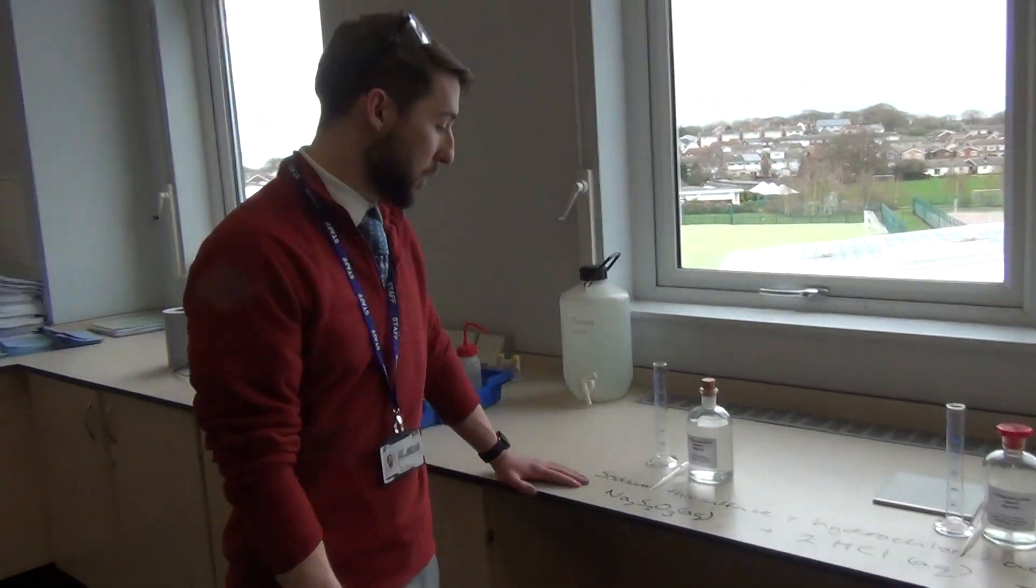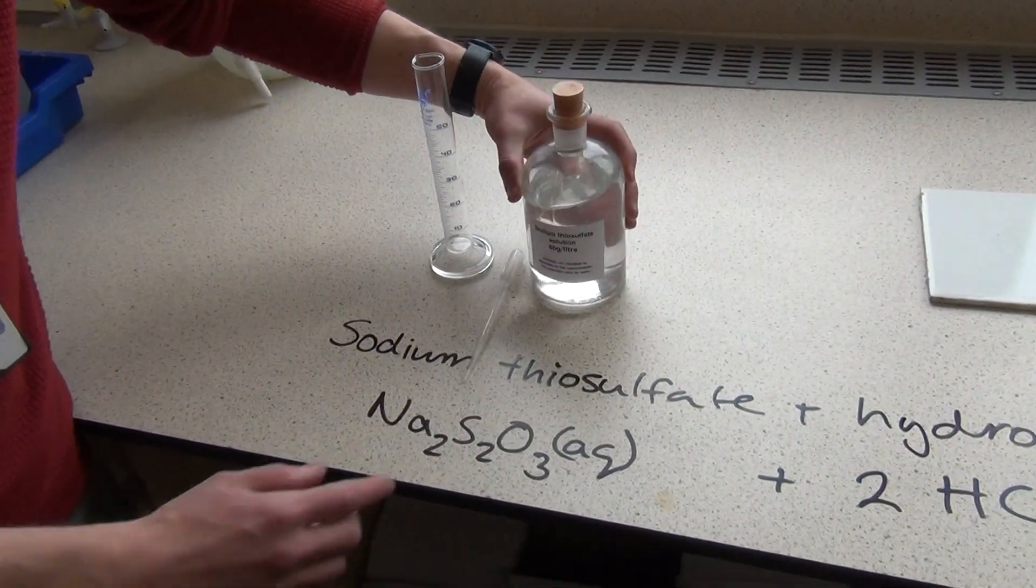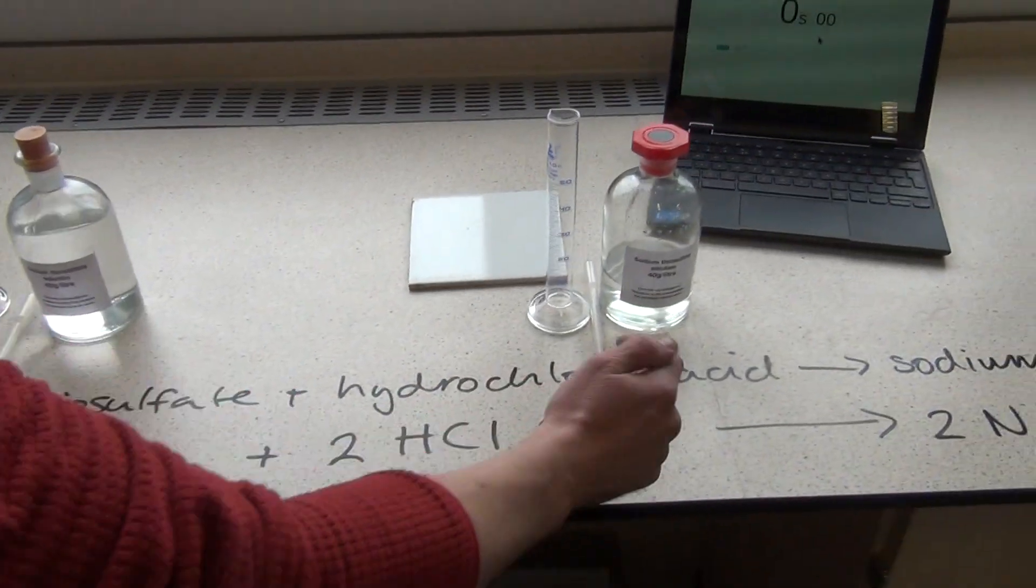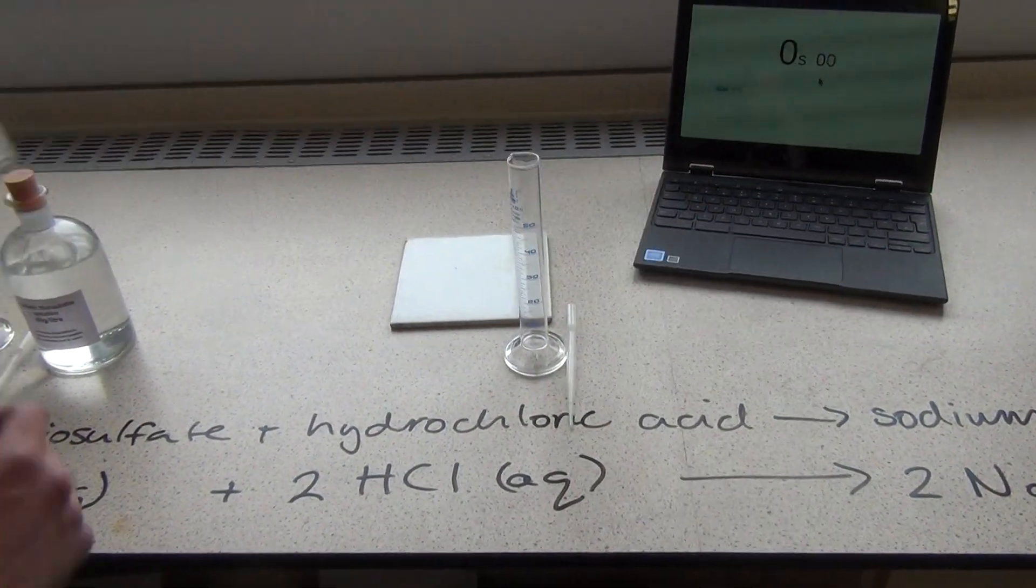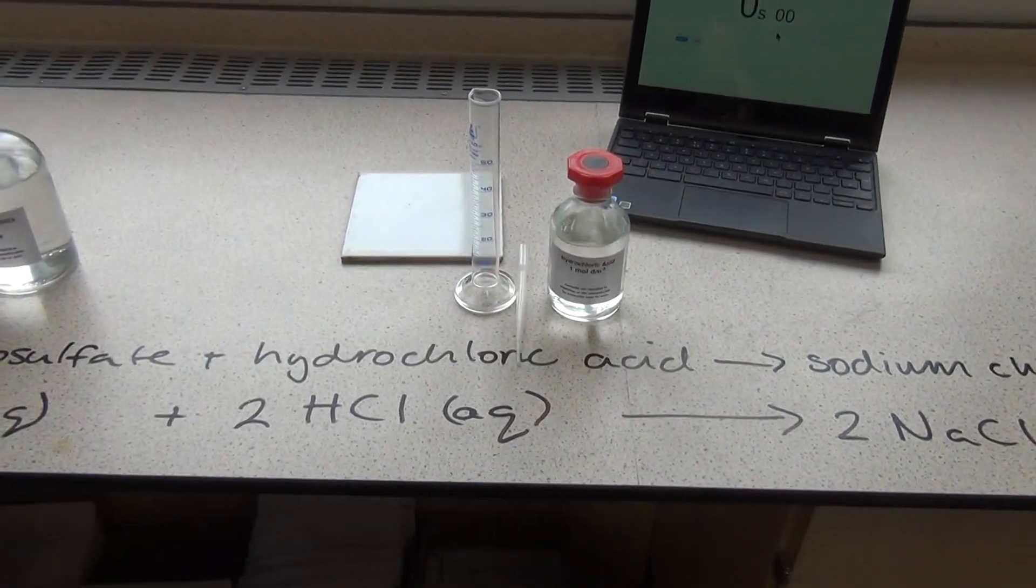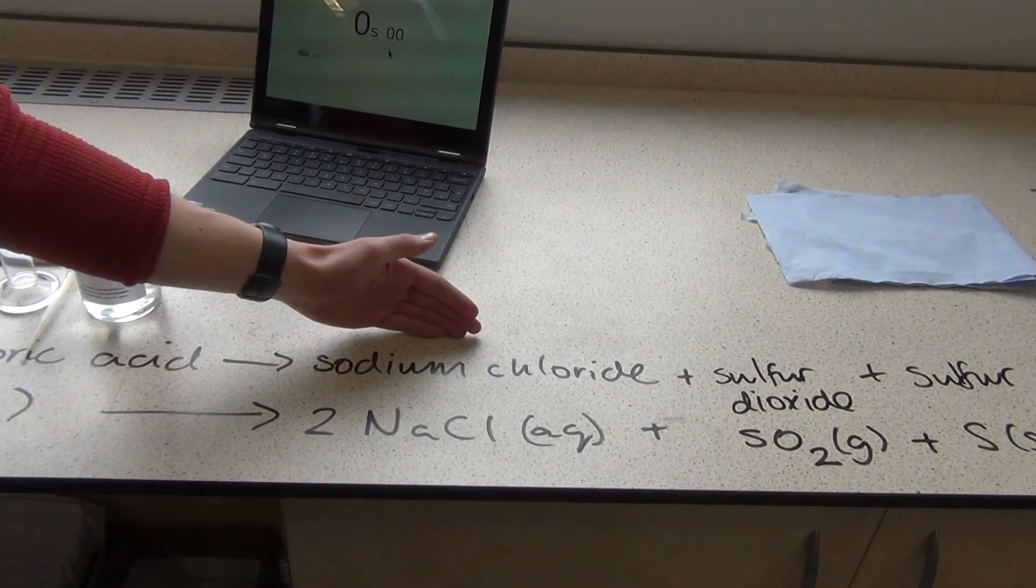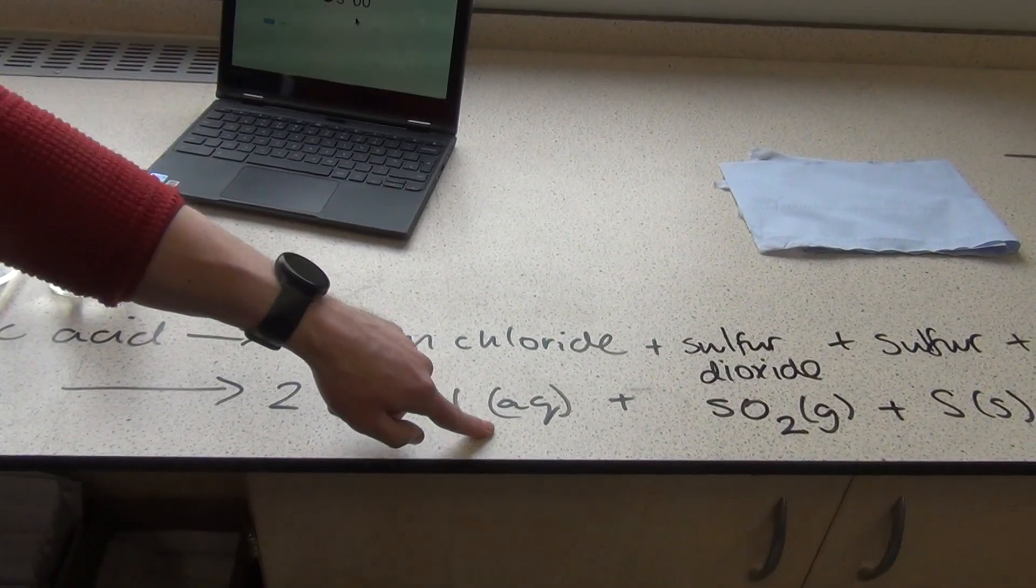If you come over here and have a look at this reaction equation, if we take this chemical here called sodium thiosulfate, and if we react it with hydrochloric acid, oh, there's my hydrochloric acid here, if I react that with hydrochloric acid, then it's going to form a few different products. The first product it's going to form is called sodium chloride, which is aqueous, that means it's a solution.